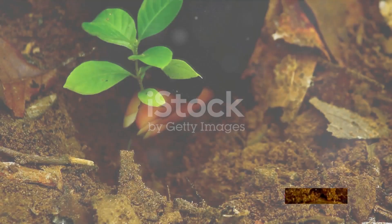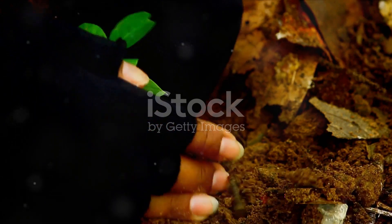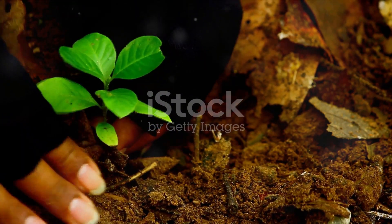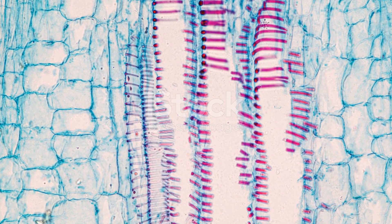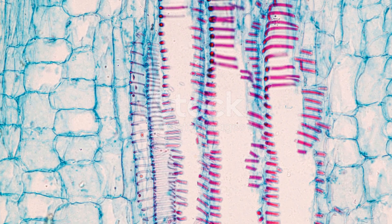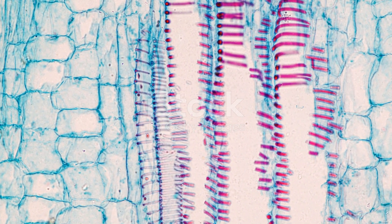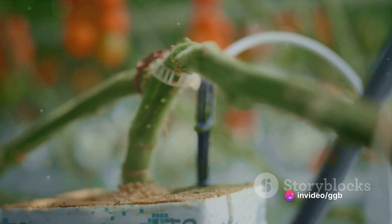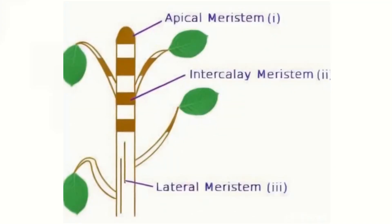Have you ever wondered how plants grow and branch out? The answer lies in a fascinating aspect of plant biology — the intercalary meristem. This specialized tissue holds the secret to the growth patterns of plants. It's like a natural architect within the plant, shaping its structure and form.